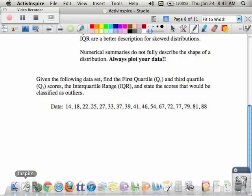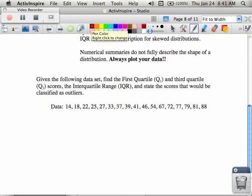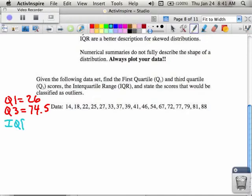So Q1 was 26 and Q3 was 74.5. So next, I need to find my IQR. I find my IQR by subtracting those two things. So 74.5 minus 26 and I end up with 48.5, thank you, 48.5.